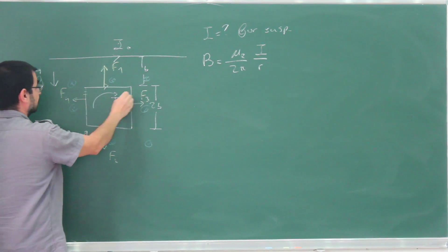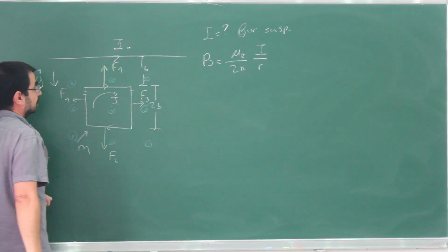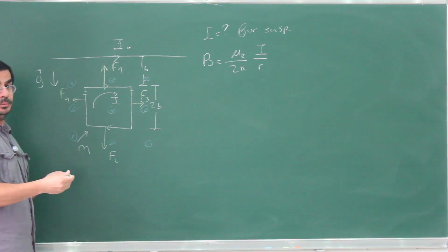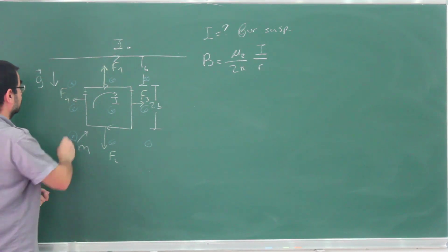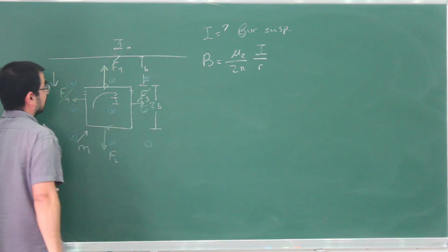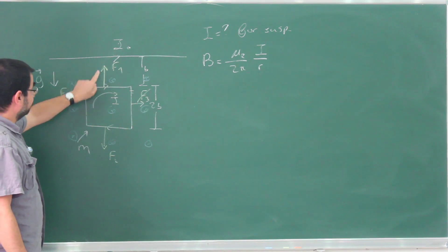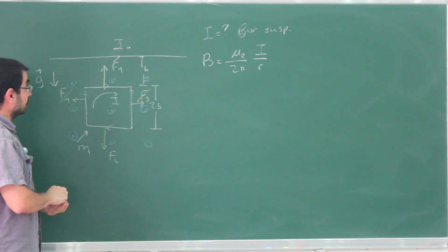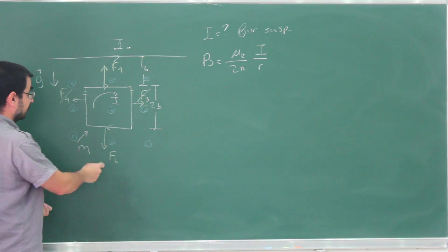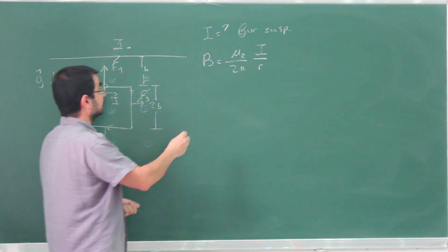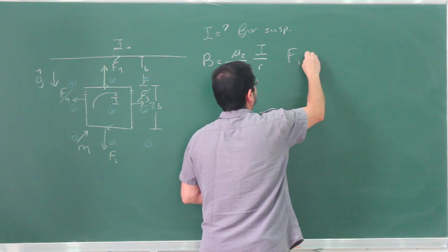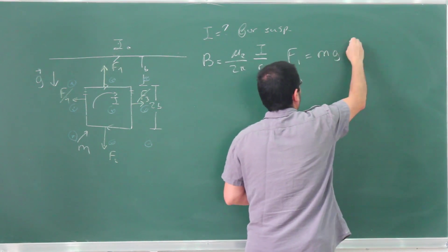F₃ and F₄ are going to completely cancel each other, because for each piece there is a corresponding piece on the other side that's going to carry an equal and opposite force. I don't need to calculate this, I only need to calculate F₁ and F₂. So F₁ is going to be against gravity, F₂ is going to help gravity, so in the end, F₁ equals mg plus F₂. These are just the magnitudes I'm writing here.